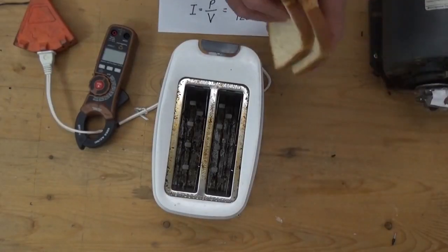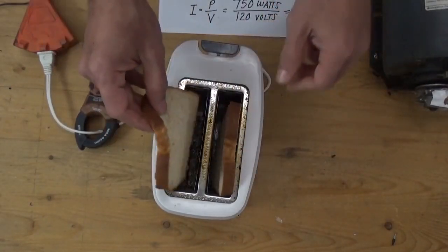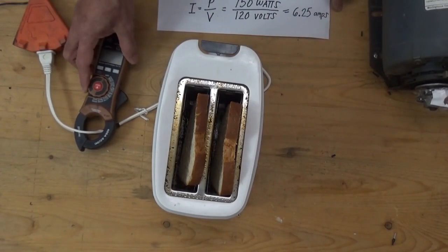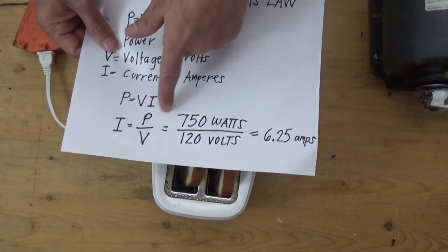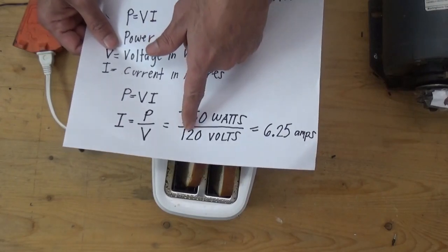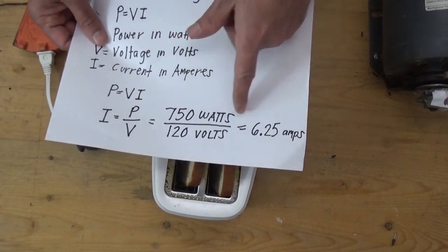We are going to verify our computation that the current is 6.25 amps. I have bread here that we're going to toast. We calculate the current using power in watts: 750 watts divided by 120 volts equals 6.25 amps. Let's prove it.